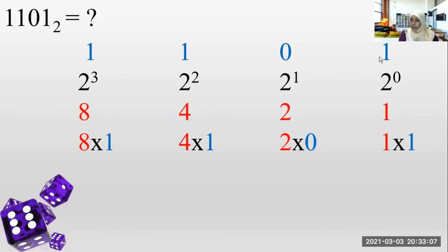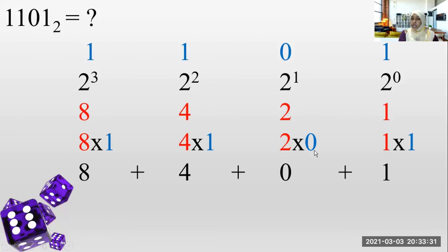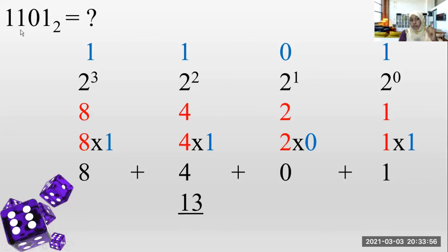Multiply each bit with the answer of its power. 1 into 1 is 1. 0 into 2 is 0. 1 into 4 is 4. 1 into 8 is 8. Now add these numbers. The answer is 13. So the decimal equivalent of the binary number 1101 base 2 is 13.